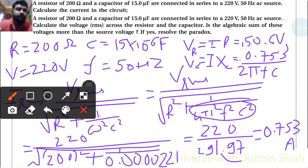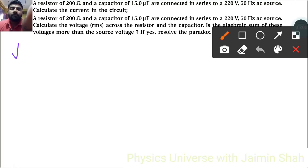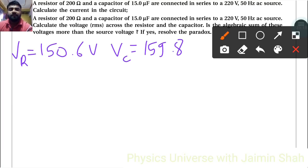Is the algebraic sum of these voltages more than the source voltage? If yes, resolve the paradox. V_R is 150.6 volt and V_C is 159.8 volt. Now algebraic sum means V equals, we can find the resultant of these two voltages.